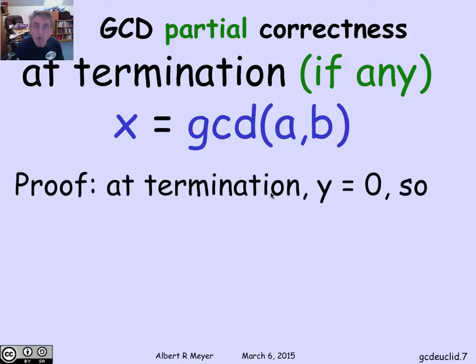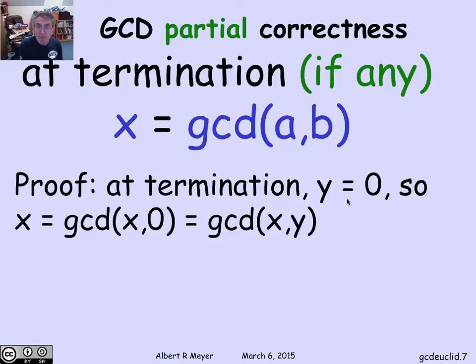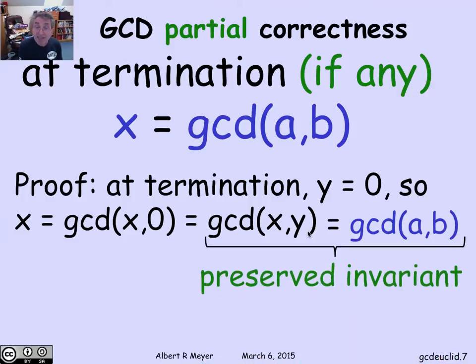At termination, what we know is that y is 0. That's the only way that this procedure stops, because otherwise the transition rule is applicable. So that means that when y equals 0 at termination, what we have is that since y is 0, GCD of x and y is equal to the GCD of x and 0. And that's equal to x, assuming again that x is positive or not 0. So x is the GCD of x and y, and by the invariant, the GCD of x and y is equal to the GCD of a and b.